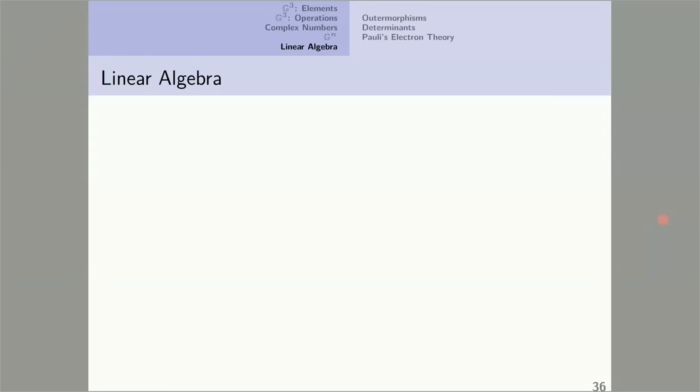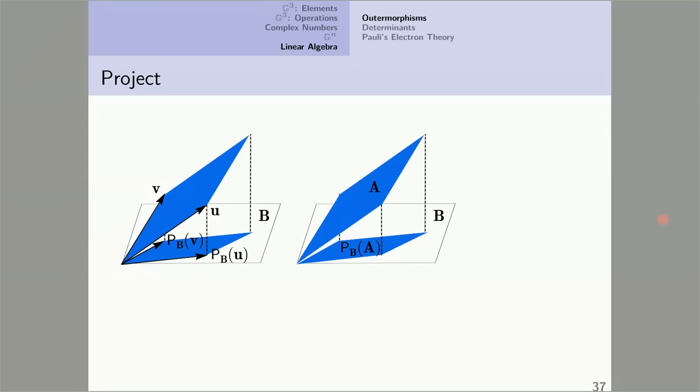This last section discusses various linear algebra topics in geometric algebra, starting with projections. This is the diagram from the last slide. This diagram shows the same geometry as the one to the right, but I've labeled things differently. Instead of A, I express A as U outer V.